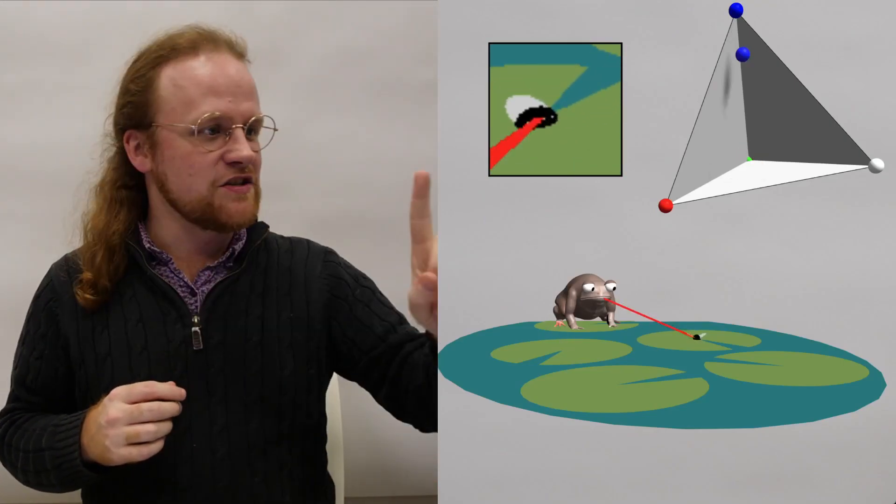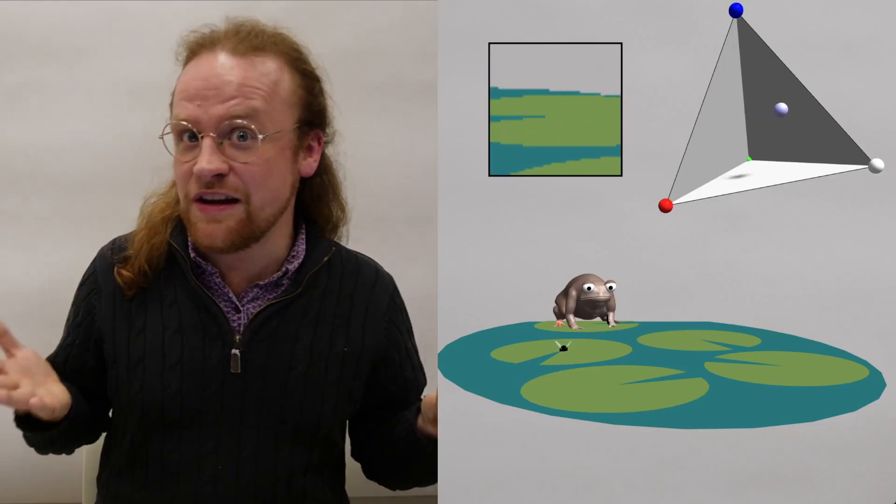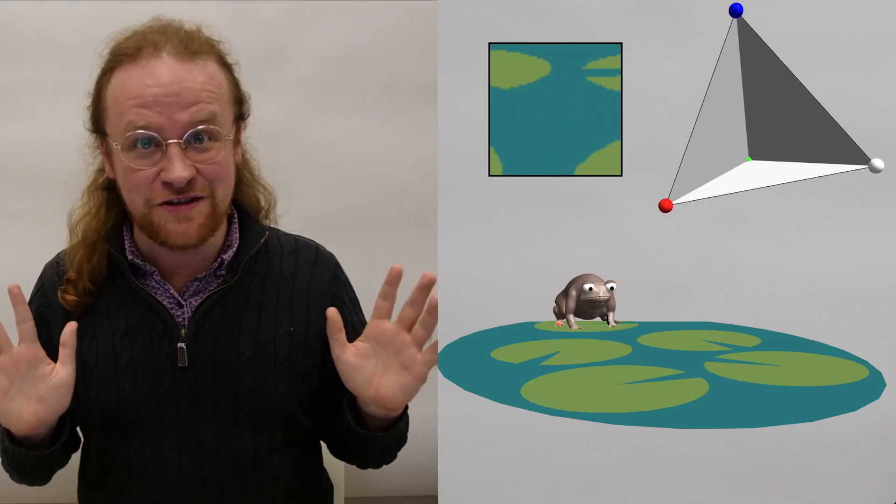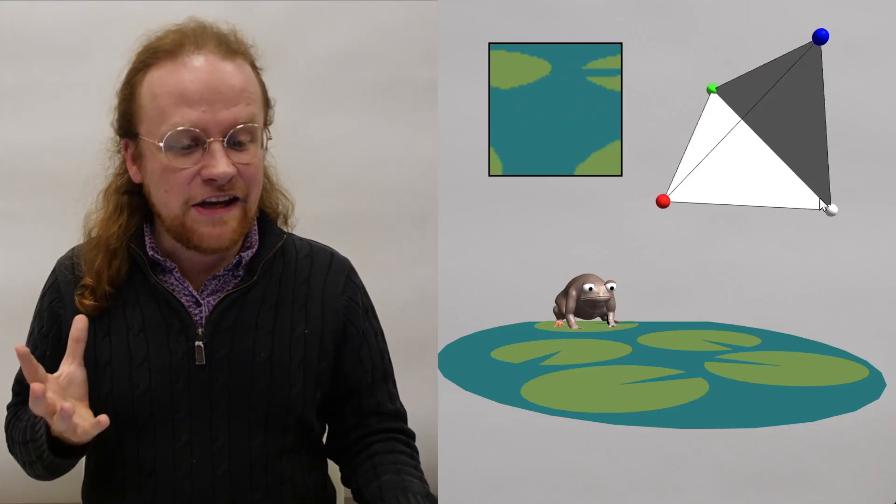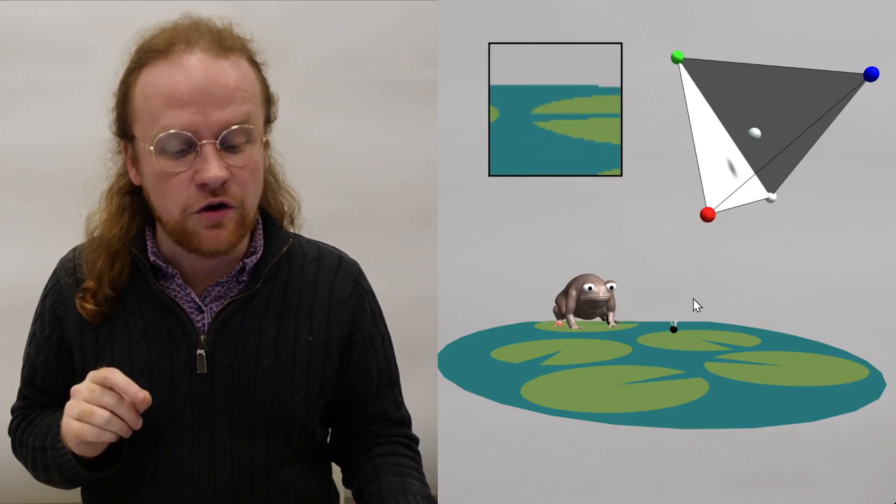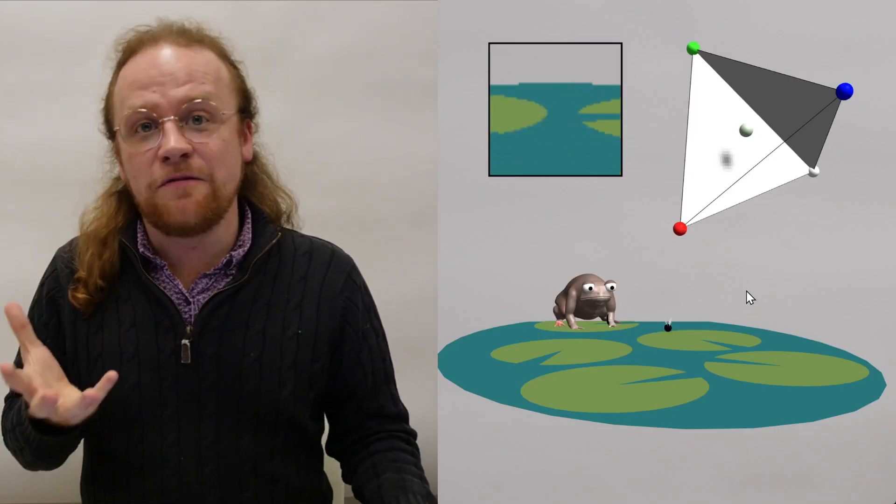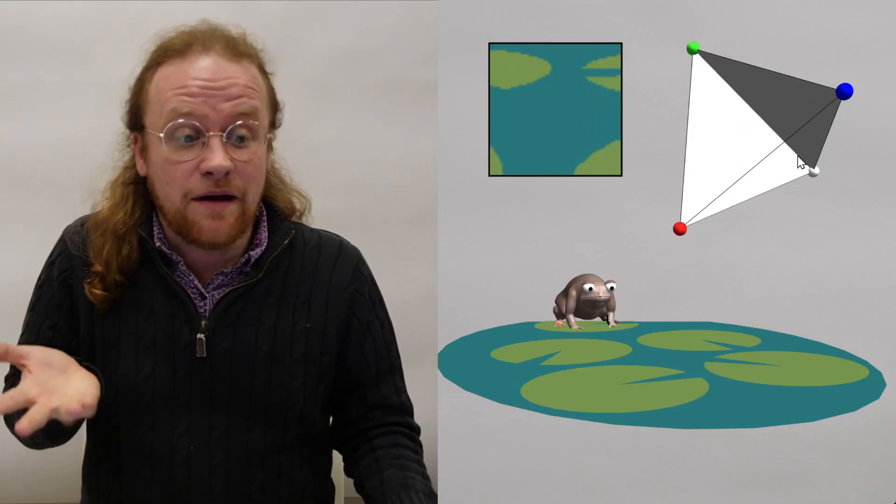Saccadic eye movements are extremely important in medicine. If your doctor has ever done this and told you to follow their finger with your eyes, there's all sorts of things they could have been checking you for, including Alzheimer's and schizophrenia and autism. In the probability simplex, each corner represents the frog having complete certainty that the fly is on a particular lily pad.